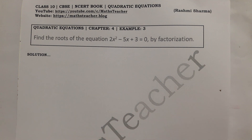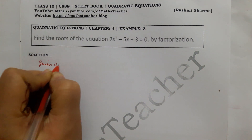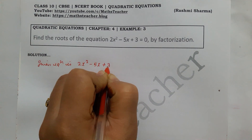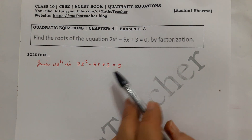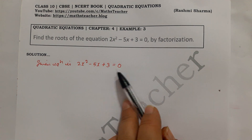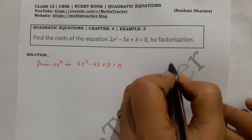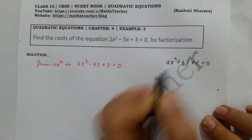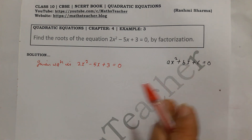The given equation is 2x squared minus 5x plus 3 equal to 0. If you have any equation and you have to find the root, the equation must equal 0. That is the first condition — to find the root of any equation, the equation must equal 0. Our general quadratic equation is ax squared plus bx plus c equal to 0, where x squared has coefficient a, x has coefficient b, and c is the constant.